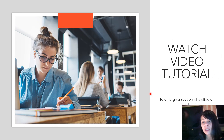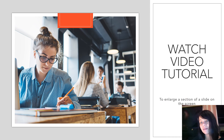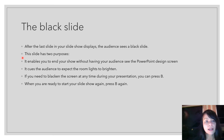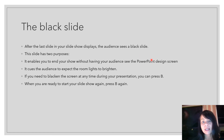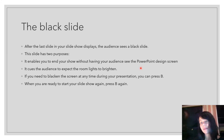Please watch the next video tutorial to see how you can enlarge a section of a slide on screen. After your last slide displays, the audience sees a black slide. This serves two purposes: it lets you end the show without your audience seeing the PowerPoint interface, and it cues them to expect the room lights to brighten. If you need to blacken your screen at any time during the presentation, press B, and press B again to bring it back.